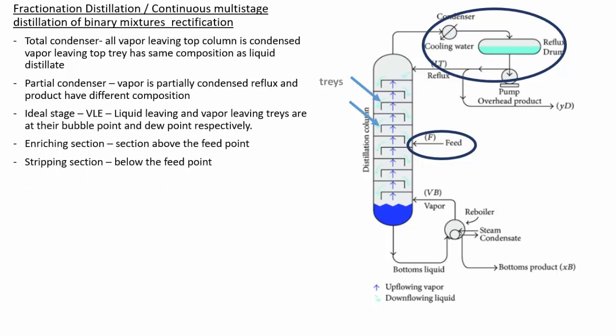The enriching section is the section above the feed point. Above the feed point, component A — the more volatile component — has higher concentration than on the previous tray, meaning the vapor is richer in the more volatile component, hence the name enriching section. The section below the feed point is called the stripping section, because below the feed tray the more volatile component A is removed or stripped out of the liquid.